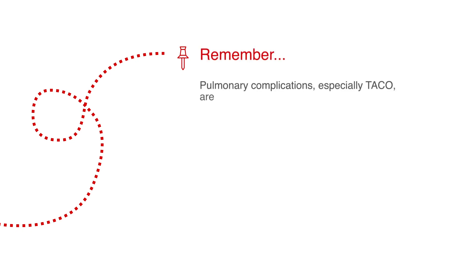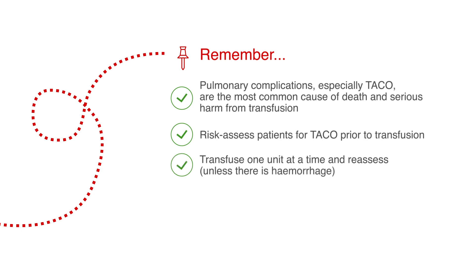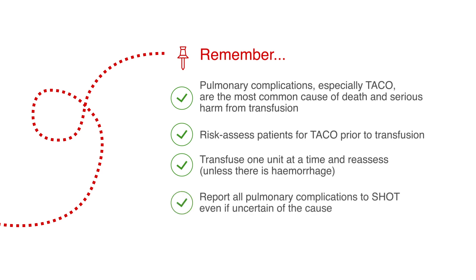The key points to remember are: TACO is the most common cause of death and serious harm from transfusion. To reduce this risk, patients should be carefully reviewed prior to transfusion, and also be given one unit at a time. In order to increase our understanding of pulmonary complications, please continue to report all of them to SHOT, even if you are uncertain which category they should be in. Further information can be found at SHOTUK.org/resources/current-resources.